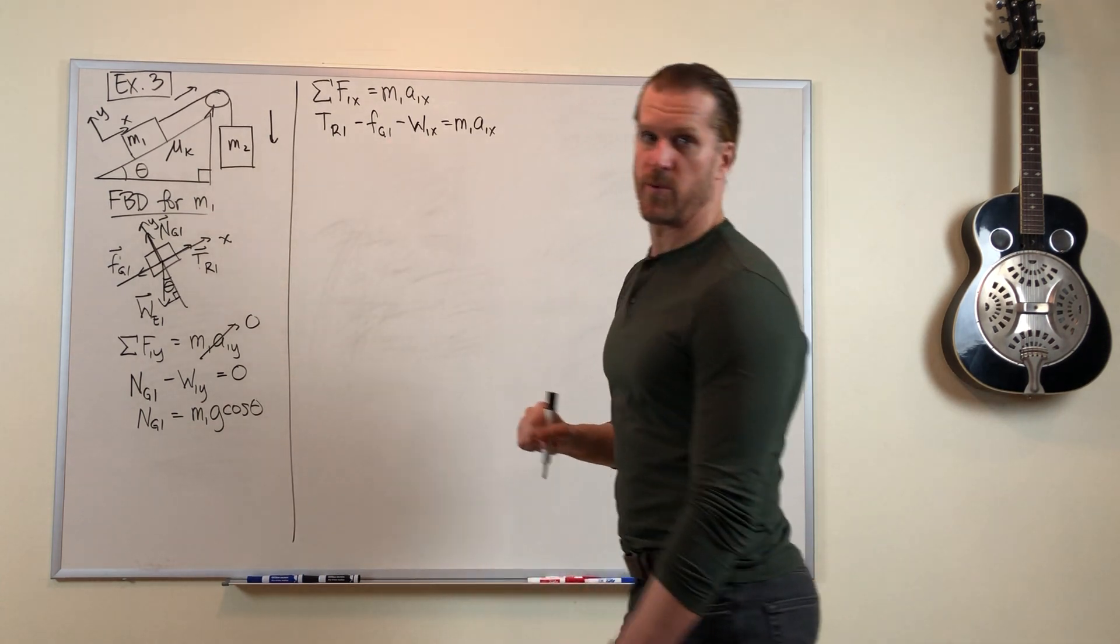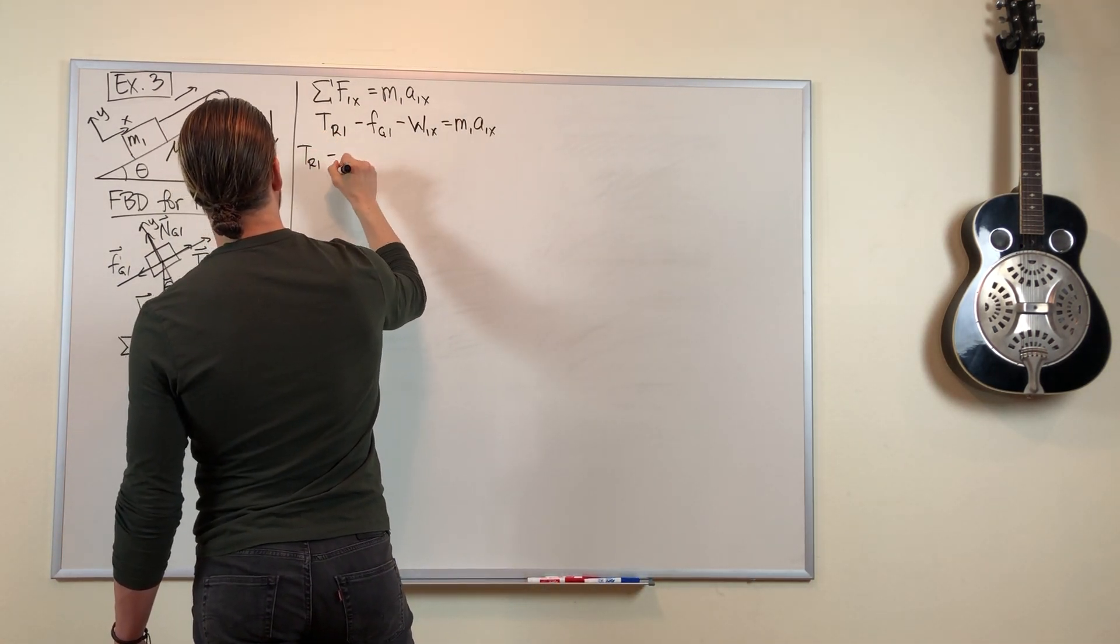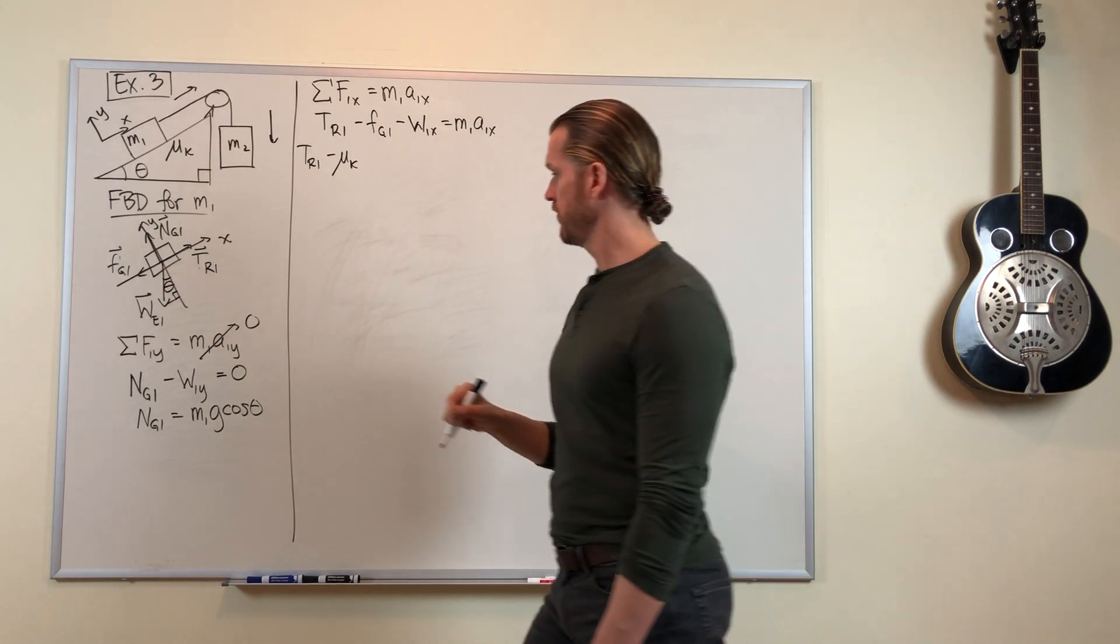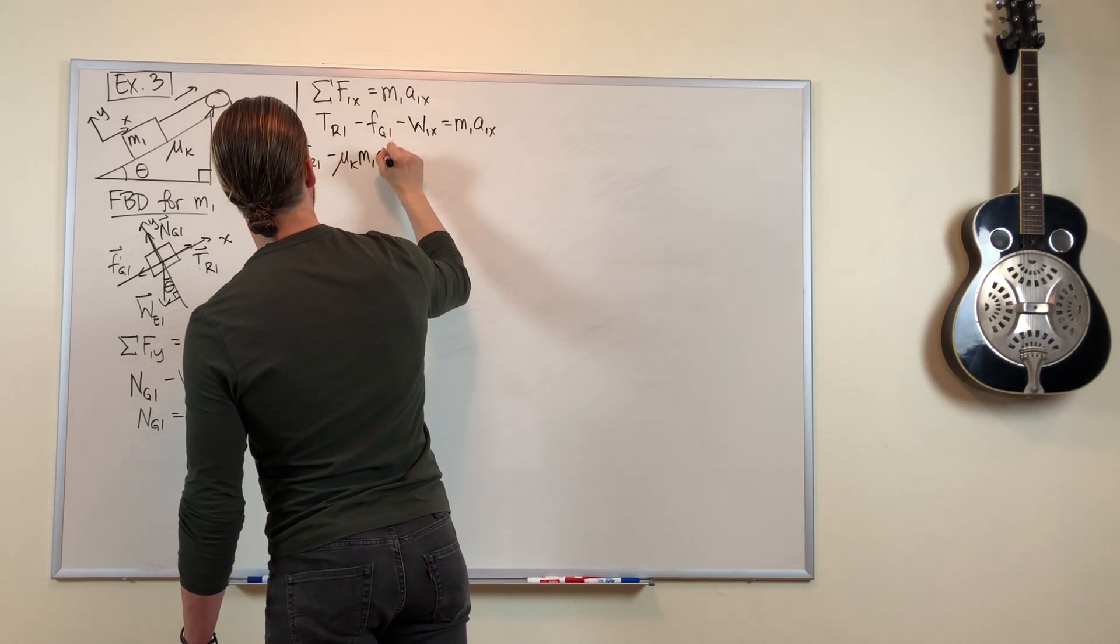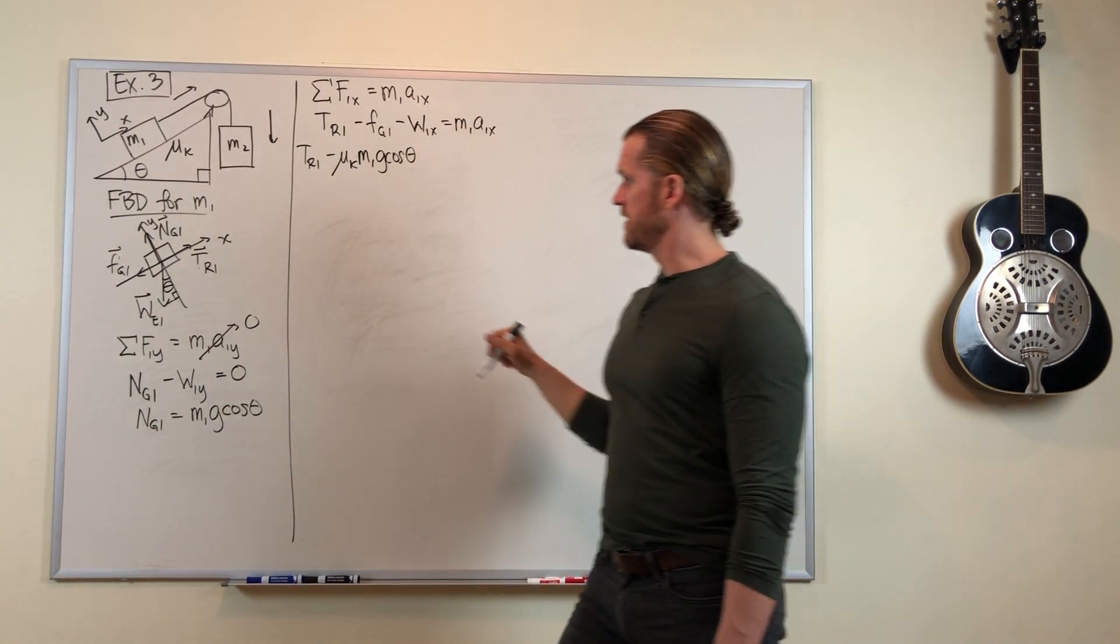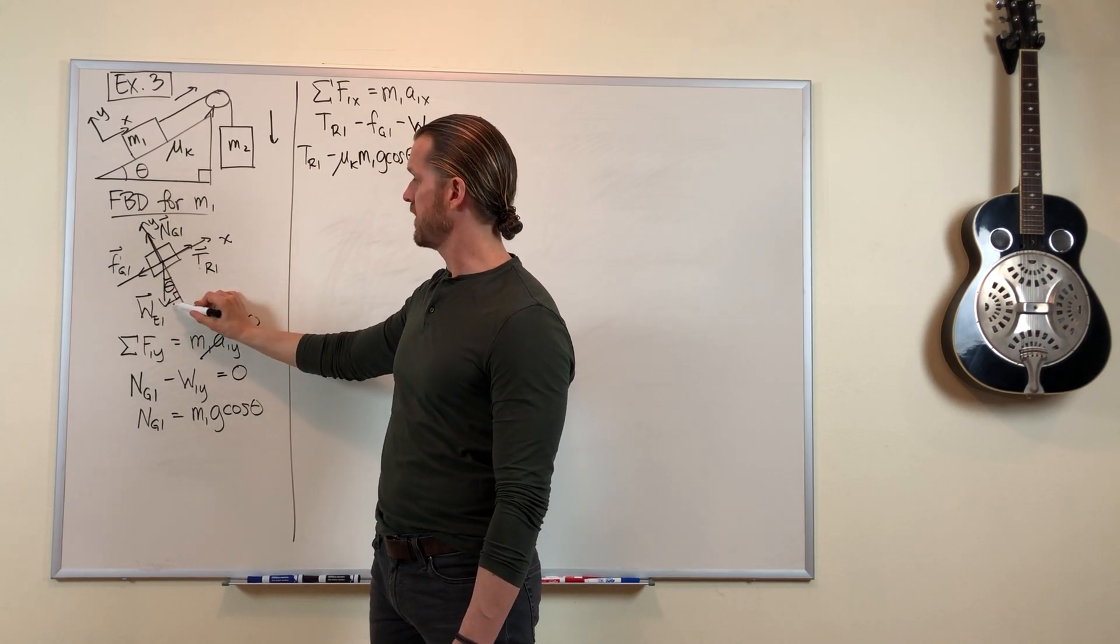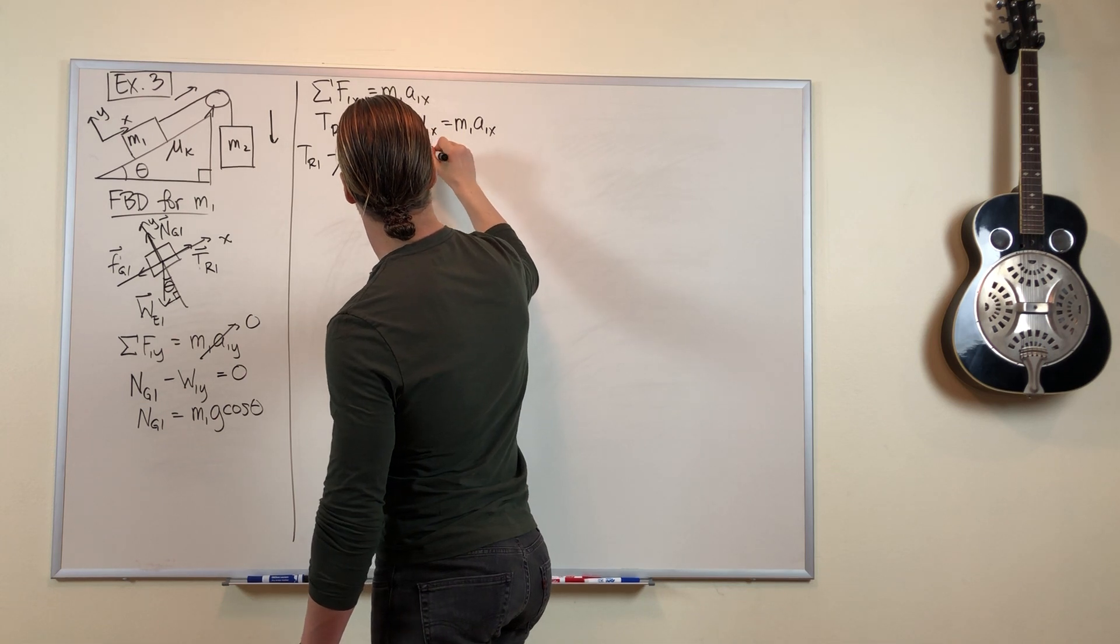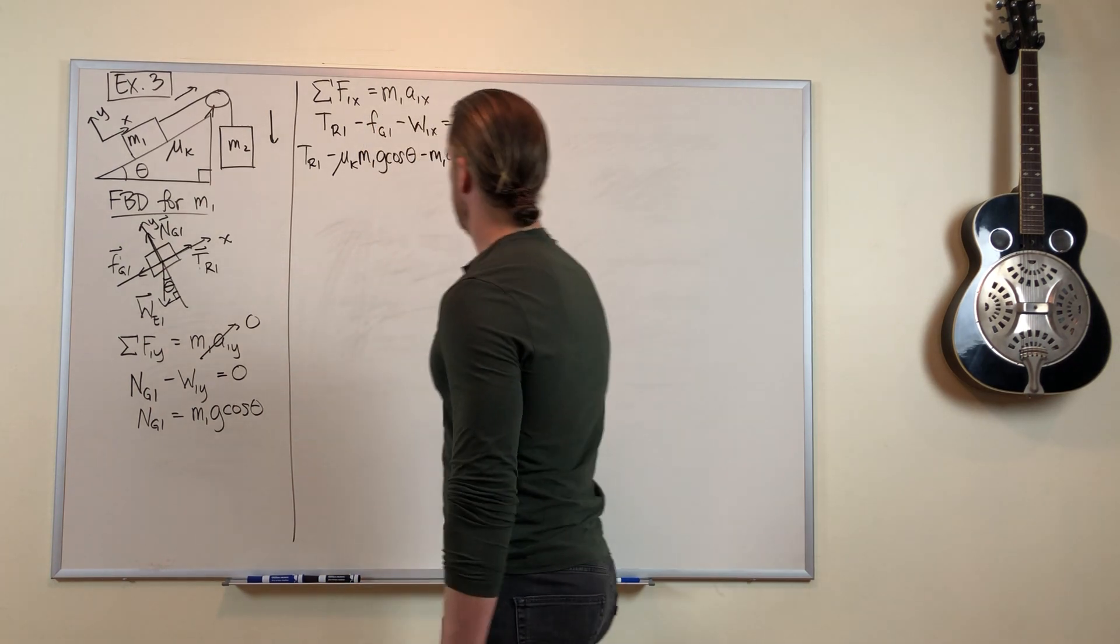So let's fill in the formulas for friction and for gravity. Remember, friction force is mu times normal force. But we just figured out that normal force is m1g cosine theta. And the gravity force is m1g sine theta, because that x-component is the opposite side of this right triangle.